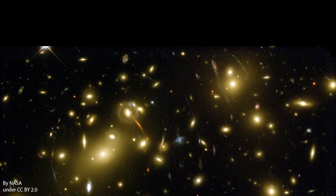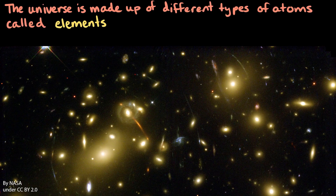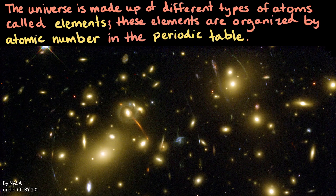The universe is made up of different types of atoms called elements, and these elements are organized by atomic number in the periodic table. So, the next time that you stare up at the starry sky, you know that everything out there is made up of elements.